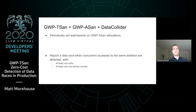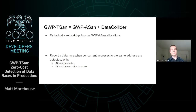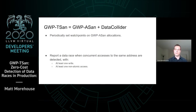GWP-TSAN uses this idea from Data Collider to add data race detection to GWP-ASAN. It periodically sets watchpoints on GWP-ASAN allocations, and then when it detects that concurrent accesses to the same address have occurred — with at least one being a write and at least one being non-atomic — it reports a data race.